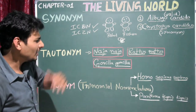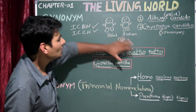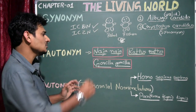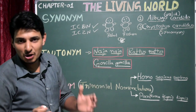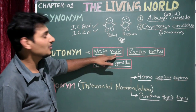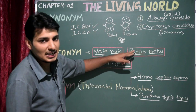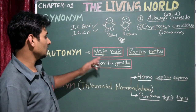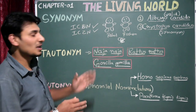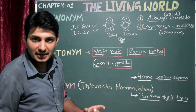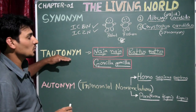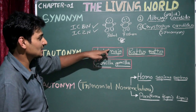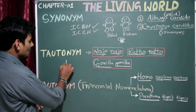The next concept is tautonym. Looking at some animal scientific names: Naja naja — where Naja is the genus name and naja is the species name; Ratus ratus, the scientific name of the rat; and Gorilla gorilla. The similarity here is that the genus and species names are both the same. When the species name is similar to the genus name, it is called a tautonym.